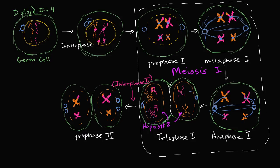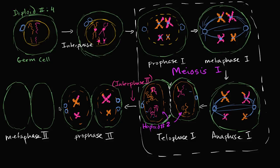We're now ready to go to metaphase two. All of meiosis two is very similar to what happens in mitosis. In metaphase two, our centrosomes have migrated to the poles. I'm going to draw it twice because I'm now dealing with two different cells. My nuclear membrane has now disappeared, and I have my dense chromosomes lining up along the equator.